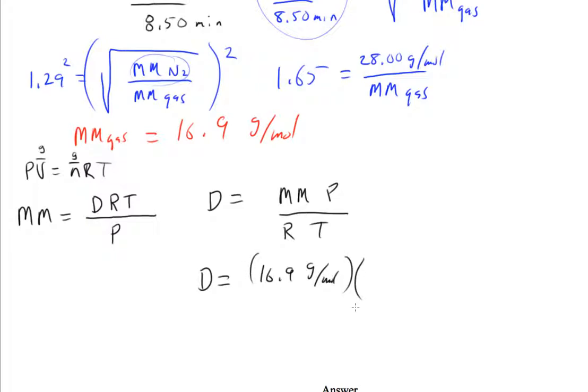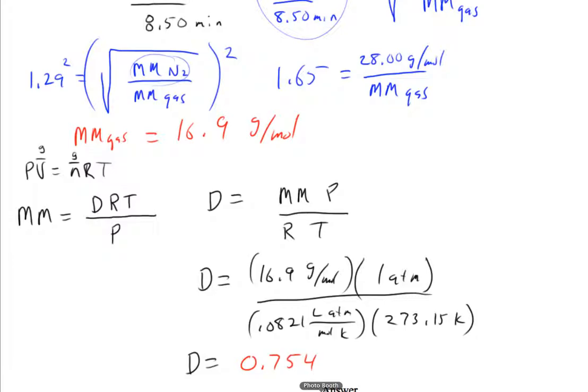My pressure is 1 atmosphere because we're at STP. I'm going to divide by 0.0821 liter atmospheres over mole Kelvin. That's R. And T, we're at standard, so that's 273.15 Kelvin. And my density turns out to be 0.754 grams per liter. So density of gases, we usually use liters because they're not very dense, and so we want to keep a number that's reasonable. So the density of this gas is 0.754 grams per liter.